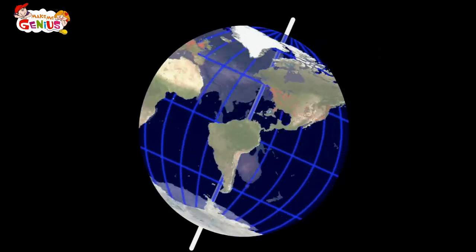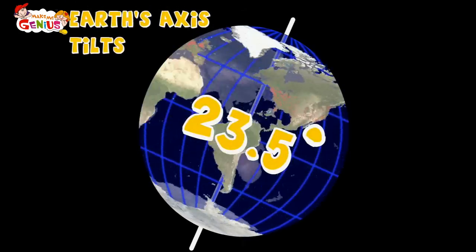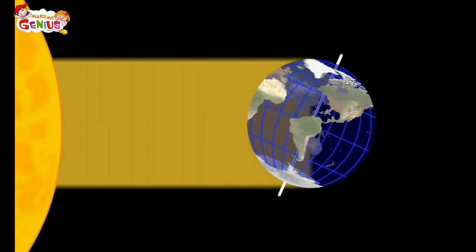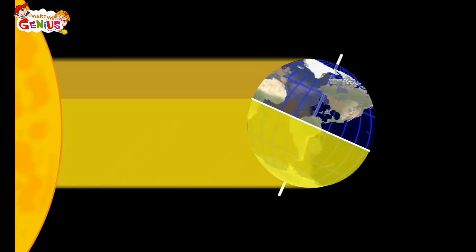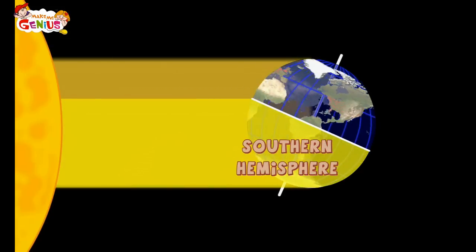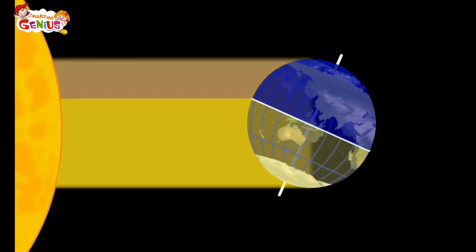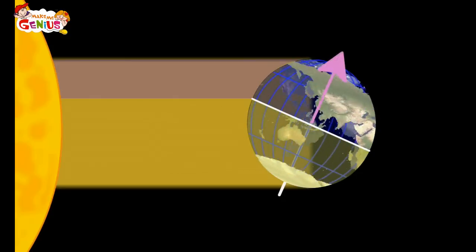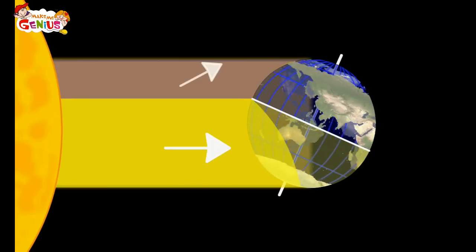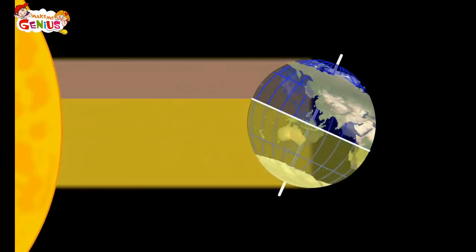The second reason is the Earth's tilt on its axis. The Earth's axis is not straight — it is tilted at about 23.5 degrees. The heat of the Sun is coming towards the Earth; the lower part, the southern hemisphere, is getting direct sunlight. The upper part, the northern hemisphere, is also getting heat and light from the Sun but it is lesser. The Sun rays hit the upper part at an angle, which reduces the intensity of the Sun's heat.